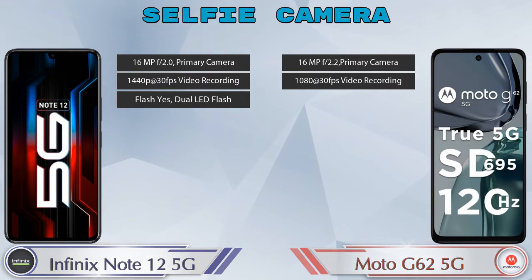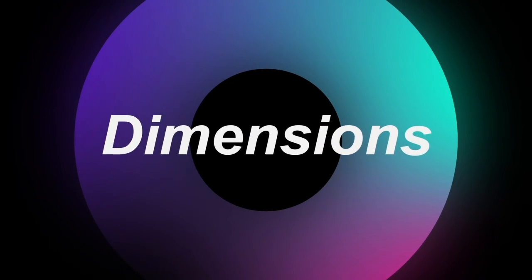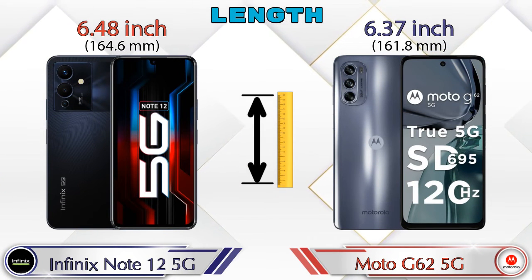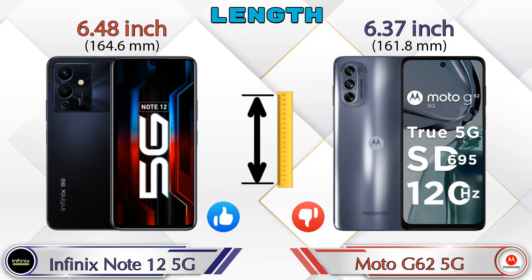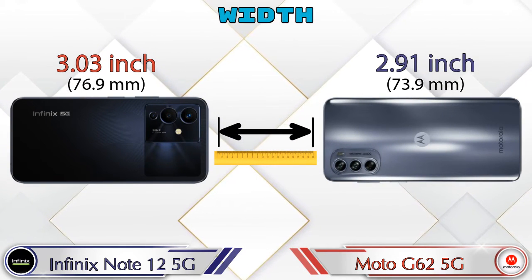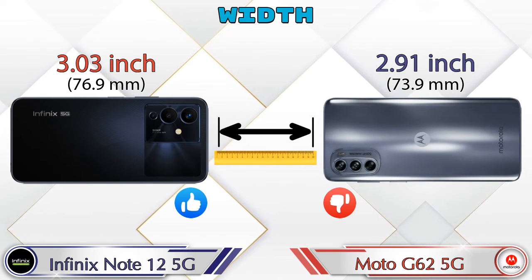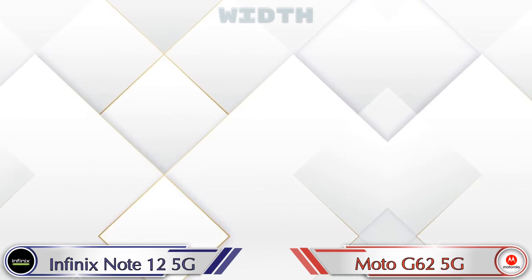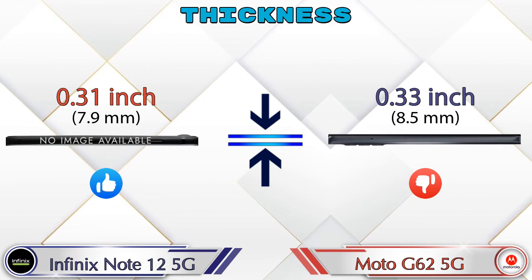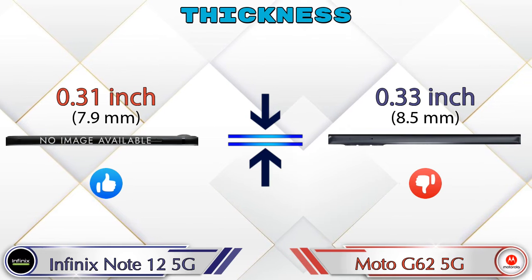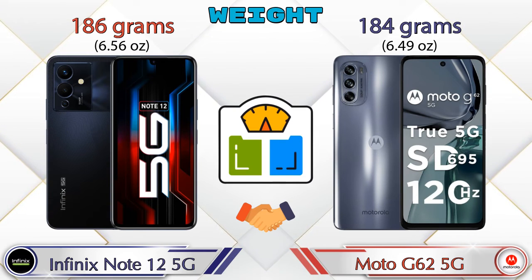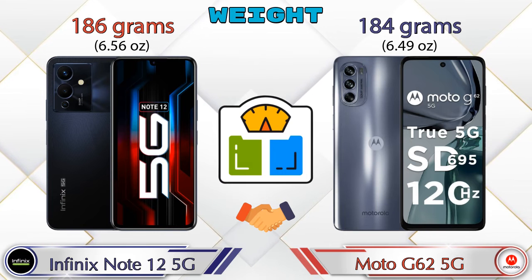Now let's check the details about dimensions. Talking about length: Note 12 5G is 6.48 inches and Moto G62 5G is 6.37 inches. Width: Note 12 5G is 3.03 inches and Moto G62 5G is 2.91 inches. Thickness: Note 12 5G is 0.31 inches and Moto G62 5G is 0.33 inches. Weight: Note 12 5G is 186 grams and Moto G62 5G is 184 grams — almost similar.